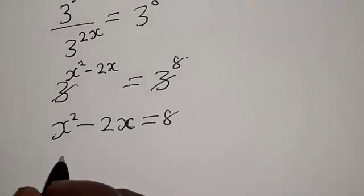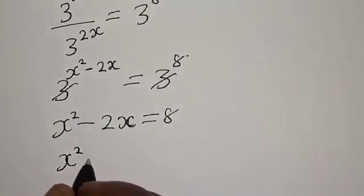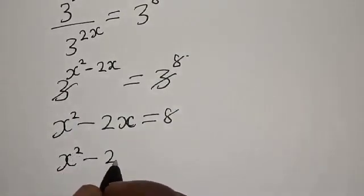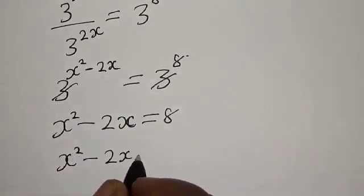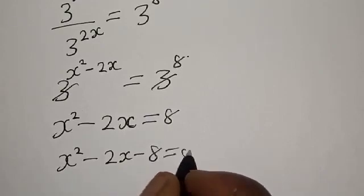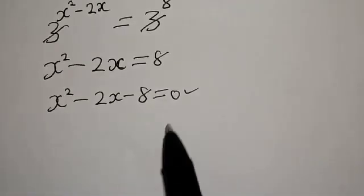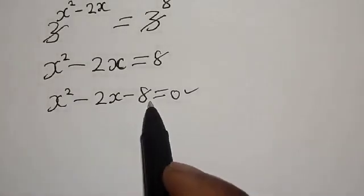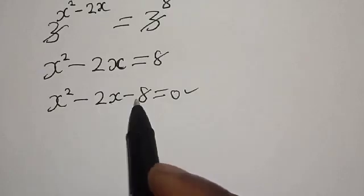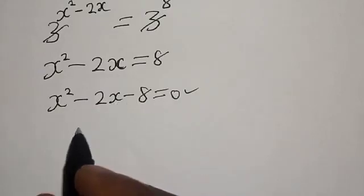Then we have S squared minus 2S minus 8 is equal to 0. This is a quadratic equation, and it can be solved by using either the factorization method or the quadratic general formula.